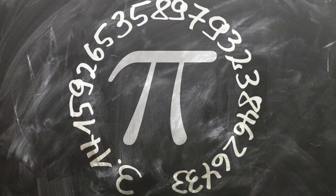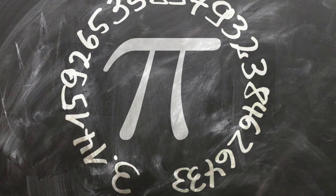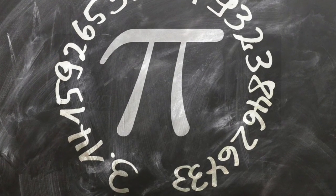This is no different than how 22 divided by 7 is an approximation for pi, at least up to two decimal points.